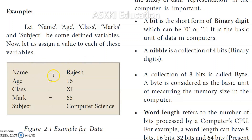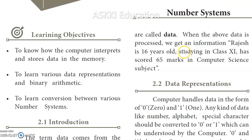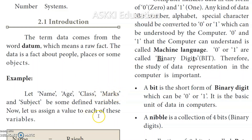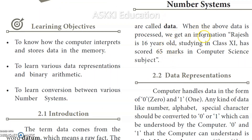The values assigned to the five different variables are called data. We use the assignment operator to assign a value to each variable — for example, name = Rajesh, age = 16, class = 11, marks = 65, and subject = Computer Science. When the above data is processed, we get information: 'Rajesh is 16 years old, studying in class 11, and has scored 65 marks in Computer Science.' That is what we call information.